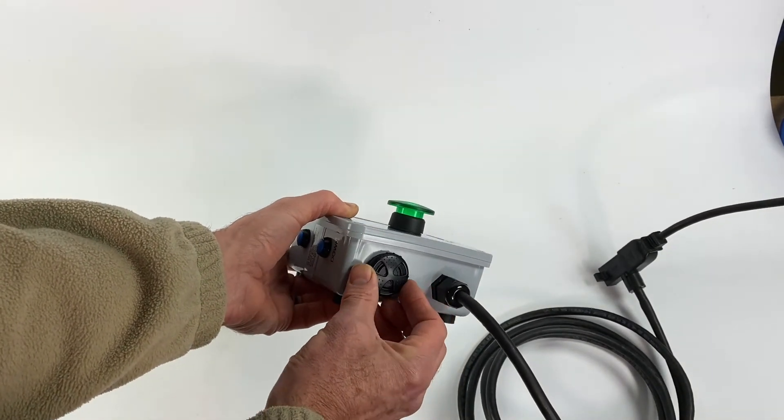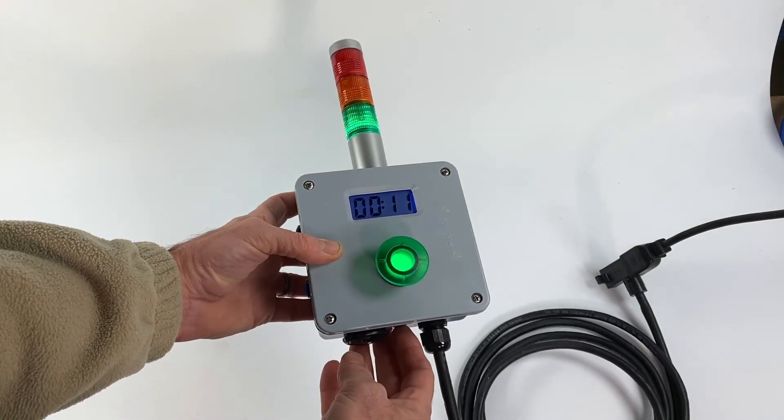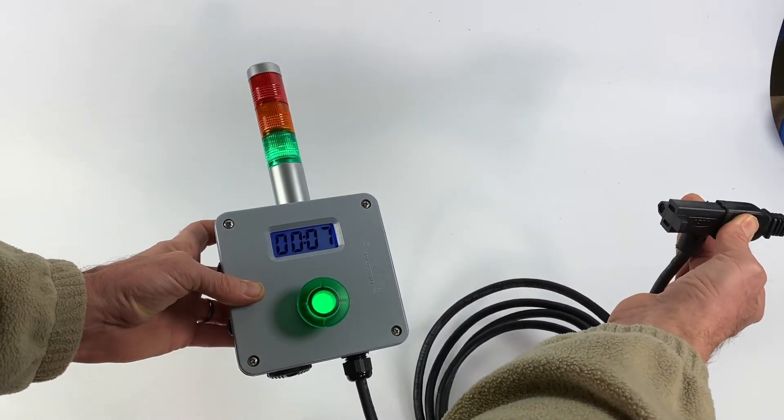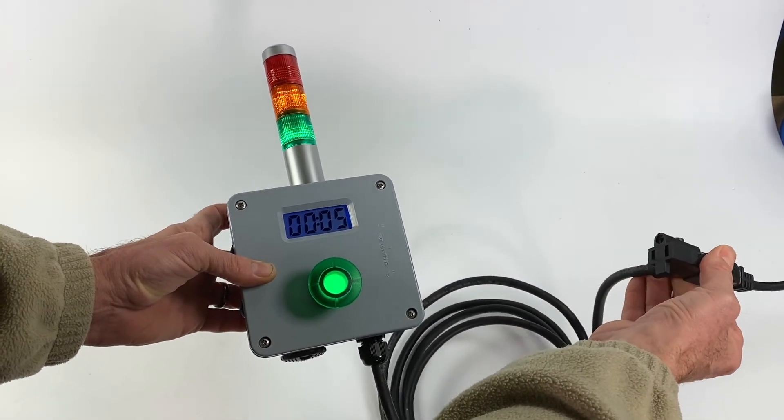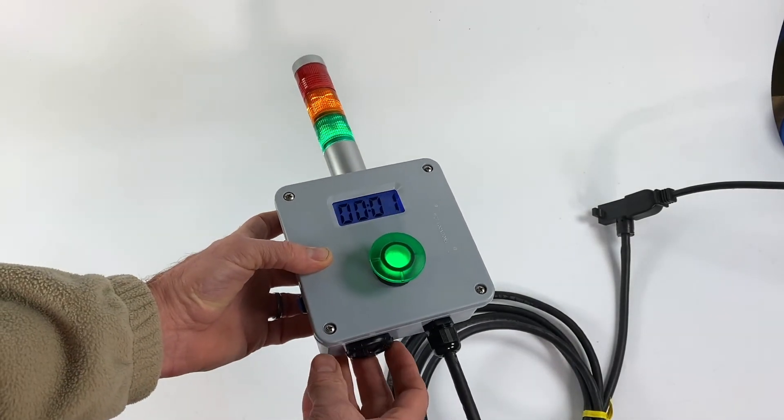I'll try to demonstrate that as well. This is the relay output where you would plug in a pump or something - pump, heater, blower, whatever you need to control. We're going to let the alarm go off.